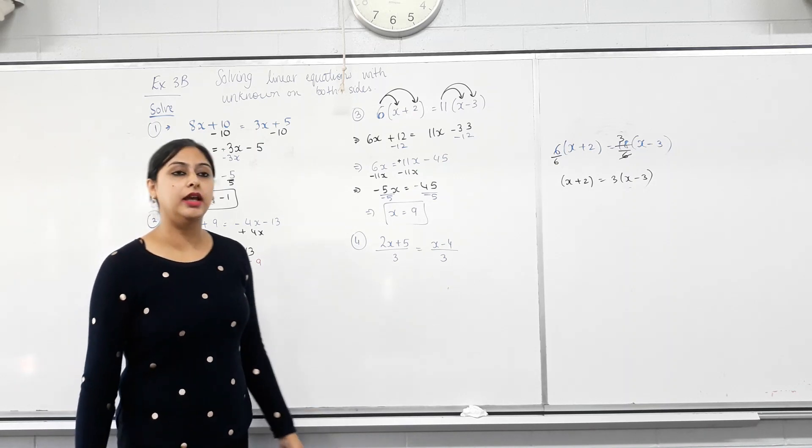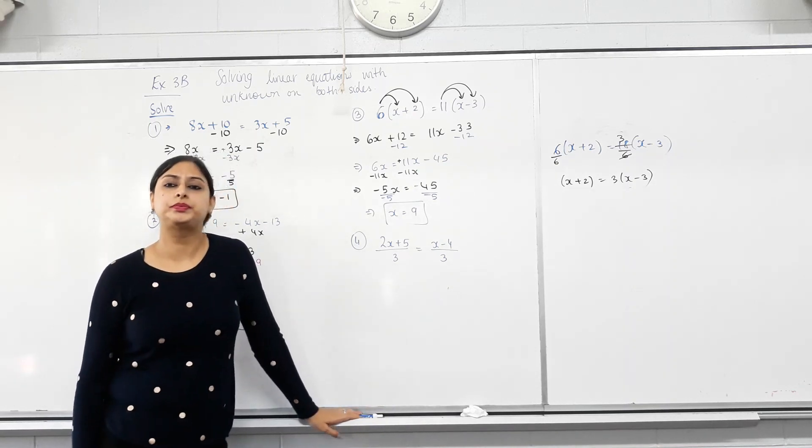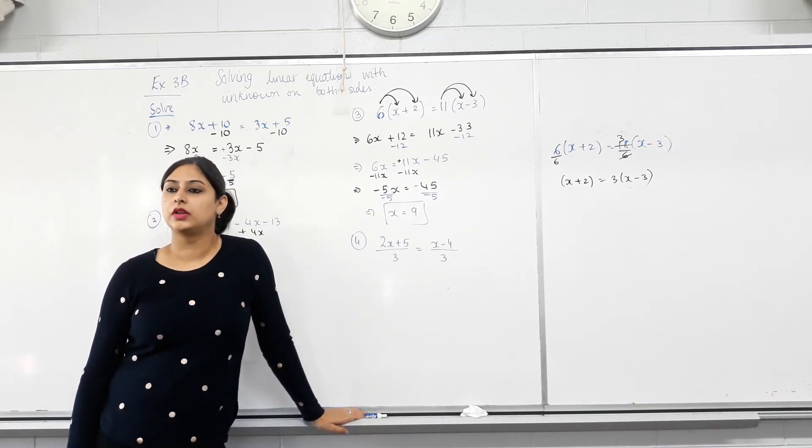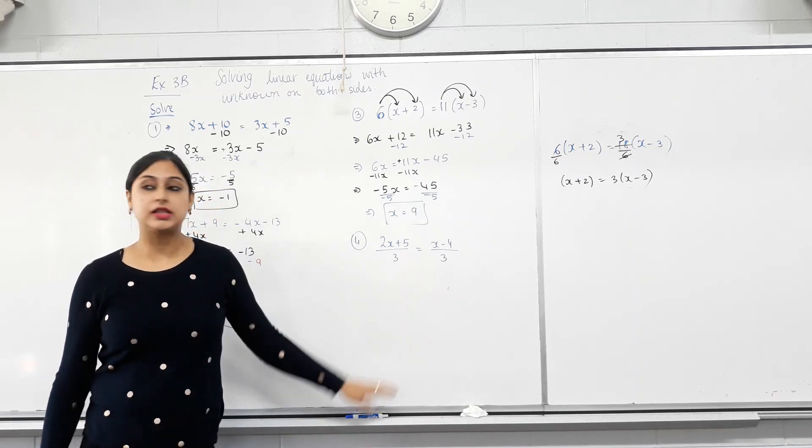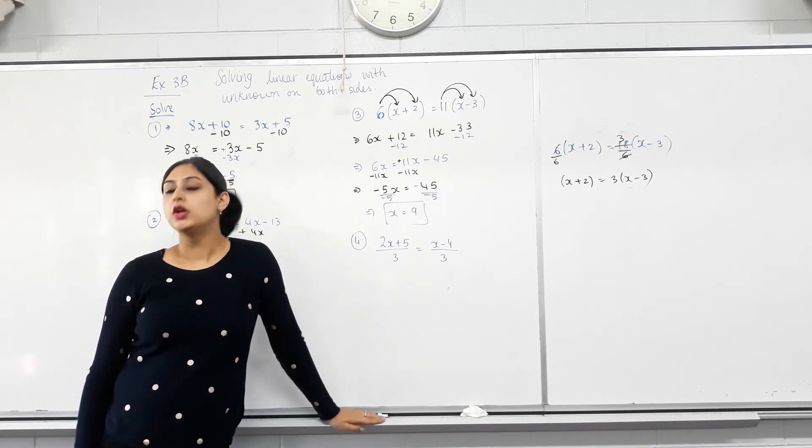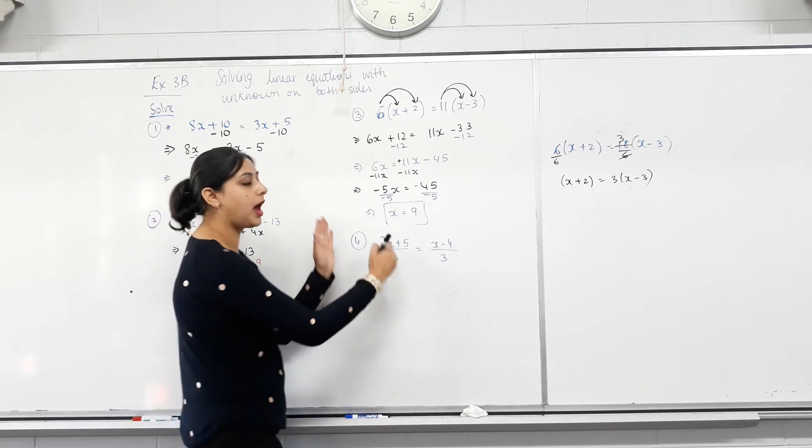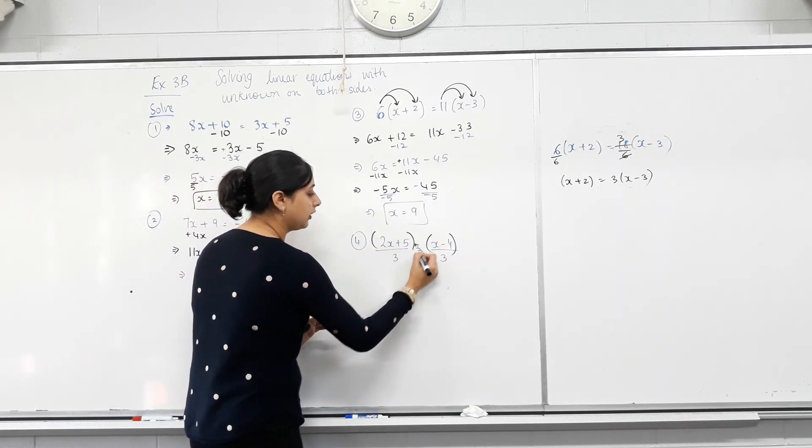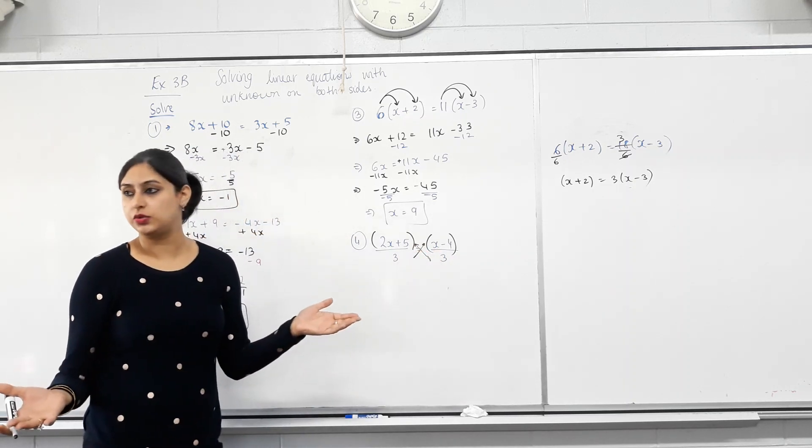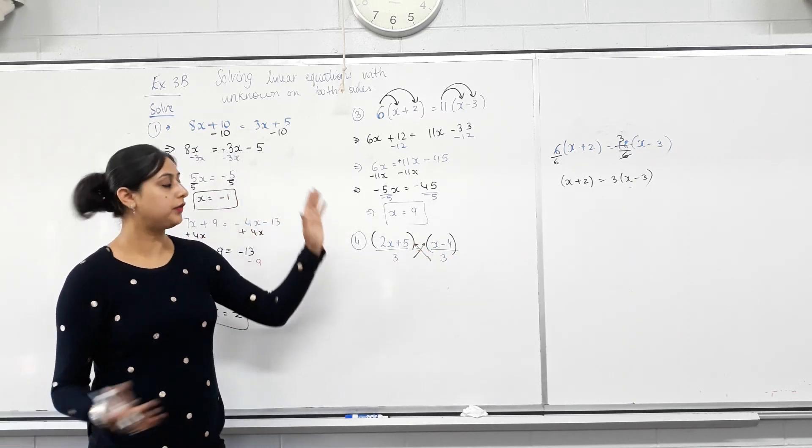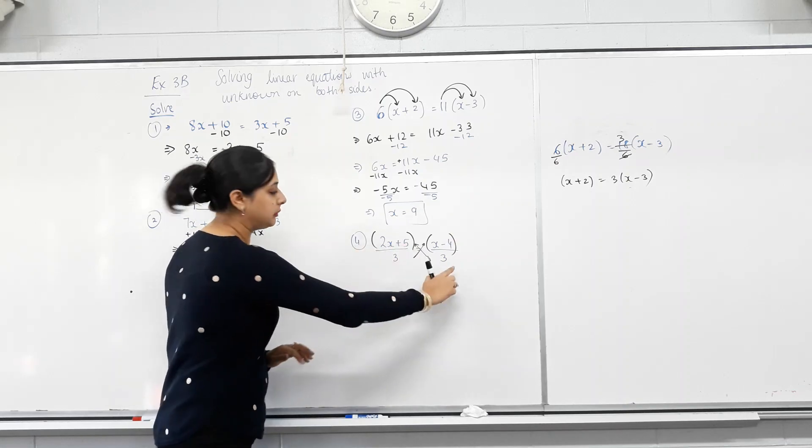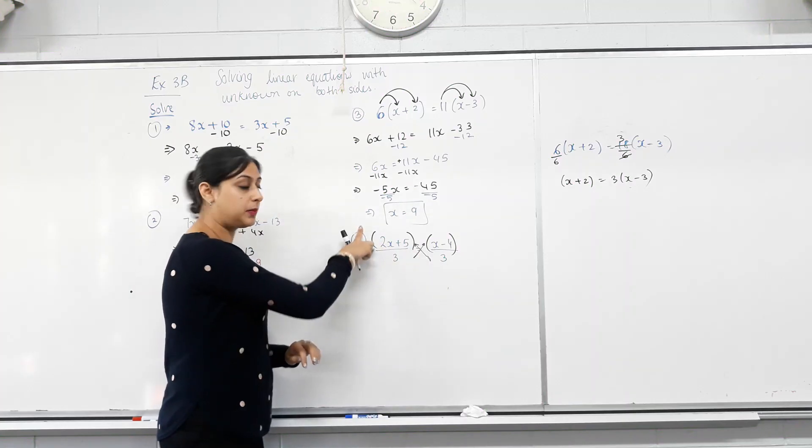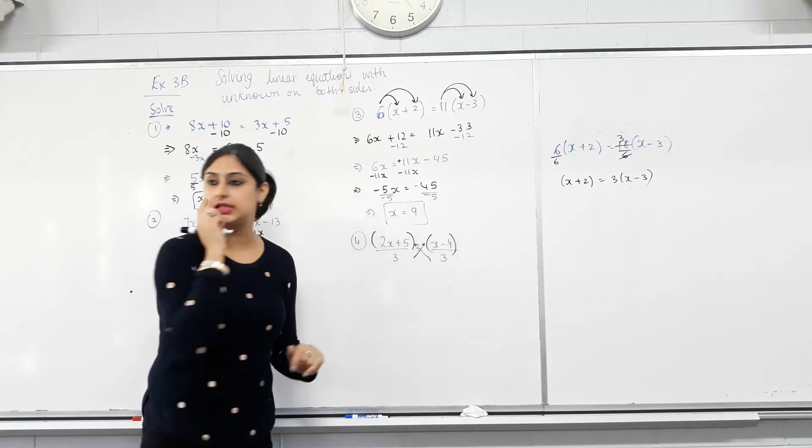The next question, again, what strategy would you use? Are the denominators same? Yes. So, one thing you can do is, if you have one fraction equals the other, you can cross-multiply. That's what you would do in any situation. Right? So, if you have one fraction equals the other, you can cross-multiply. This denominator goes here, gets multiplied. This denominator goes here, gets multiplied.